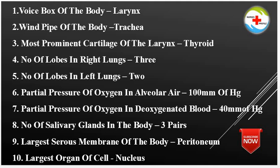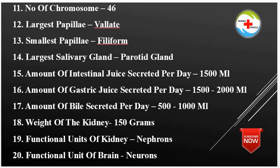Largest Organ of the Cell: Nucleus. Number of Chromosomes: 46. Largest Papillae: Vallate Papillae. Smallest Papillae: Filiform Papillae. Largest Salivary Gland: Parotid Gland.